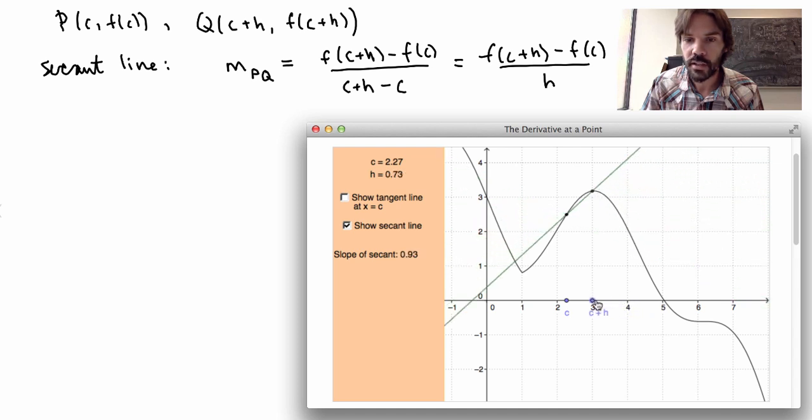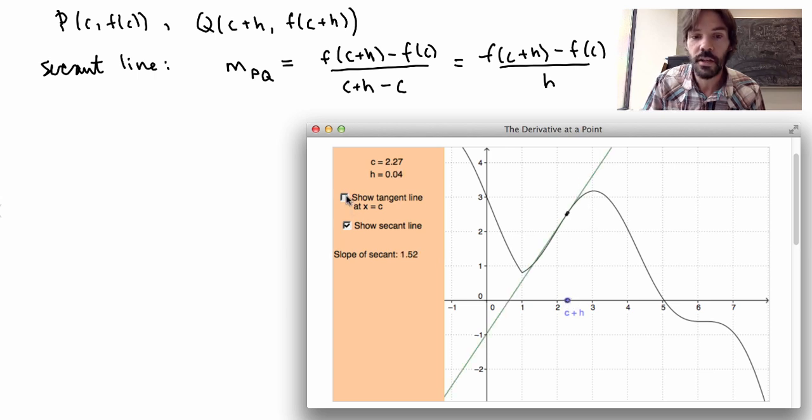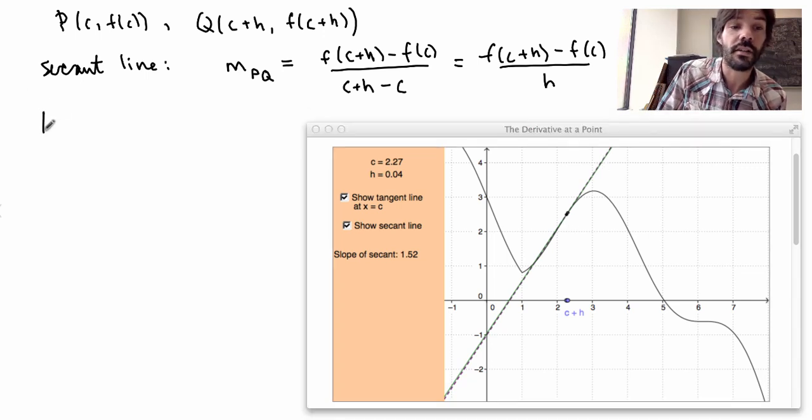You see what happens. So if I bring it very close, then the secant line just becomes what I said was the tangent line. It becomes the line that barely just touches the graph. So if I actually send it to be extremely close, then I get this line which is drawn in purple here, which is the tangent line to the graph. So that's how I define the tangent line.